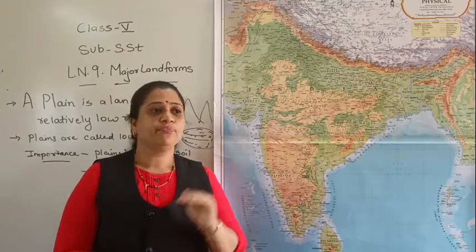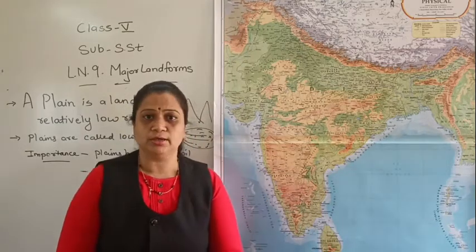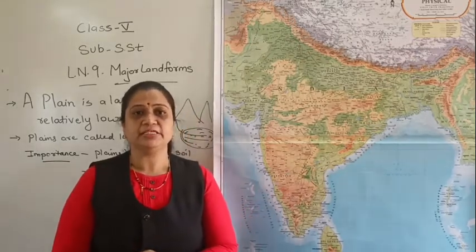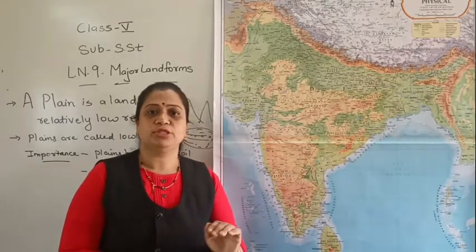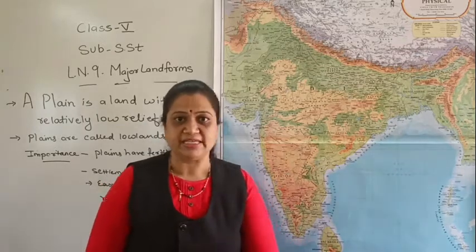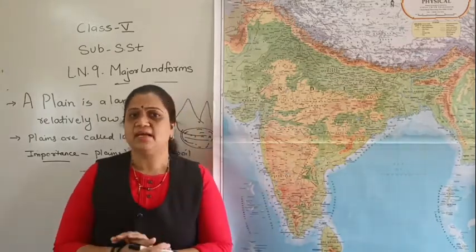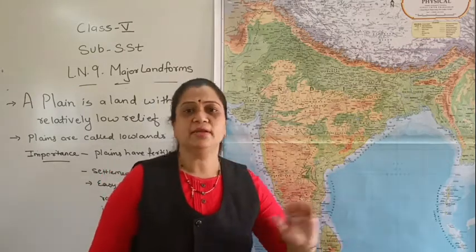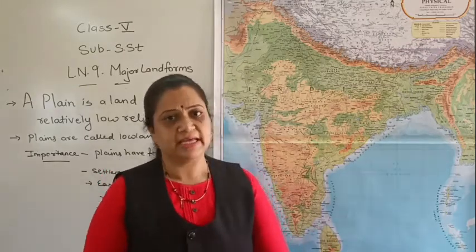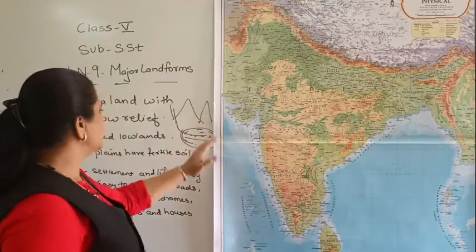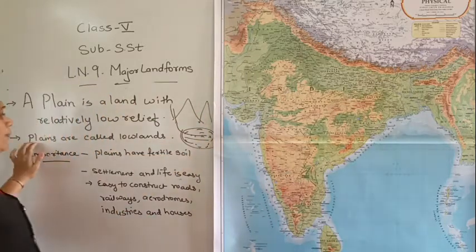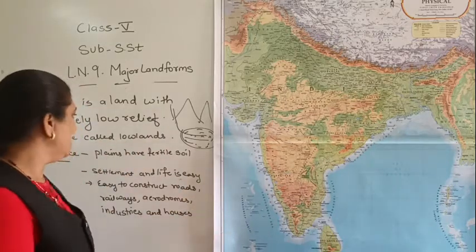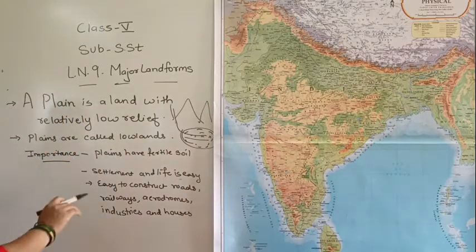We see different landforms on the earth — mountains, plateaus, and plains — but life is very easy and possible on the plain surface. On mountains, life is very difficult, but on the plain relief, life is easy. Plains are also called the lowlands because they are on the plain surface.